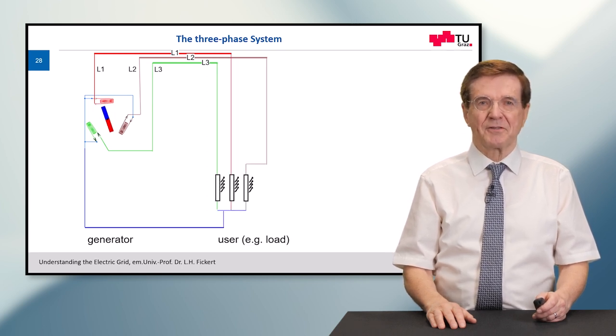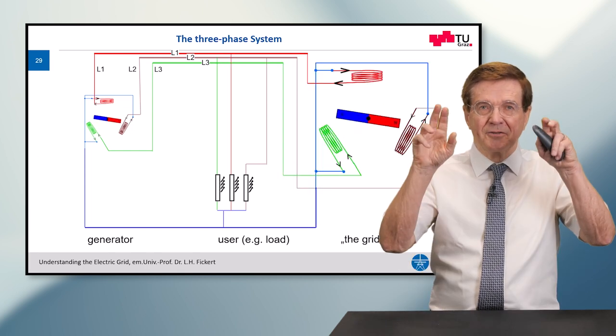Now, let's add a user, for example, a heater. And now it comes the grid.